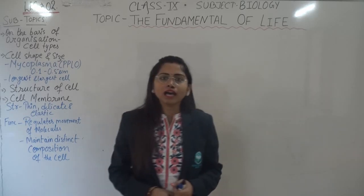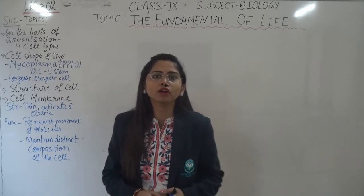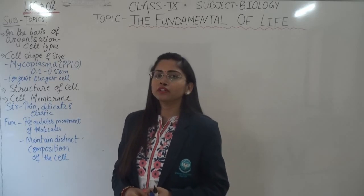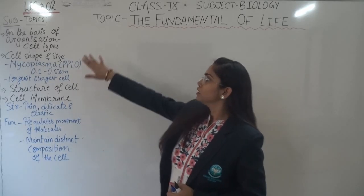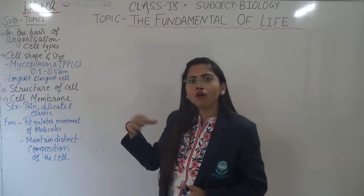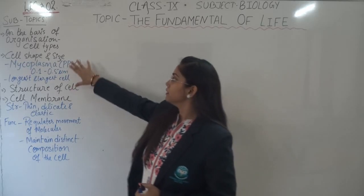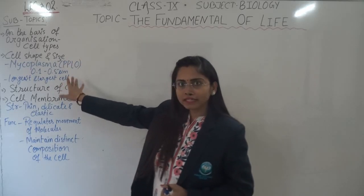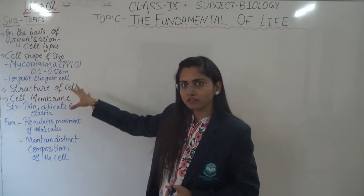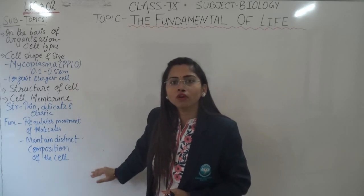In the last lecture I discussed about the type of organism based on the number of cells — unicellular and multicellular. So in today's class you will be learning about the cell type, meaning organization — how prokaryotic and eukaryotic cells differ — and then cell shape and size, structure of the cell, what it is made up of, what are the contents in it, and about cell membrane. We will be covering all these things.